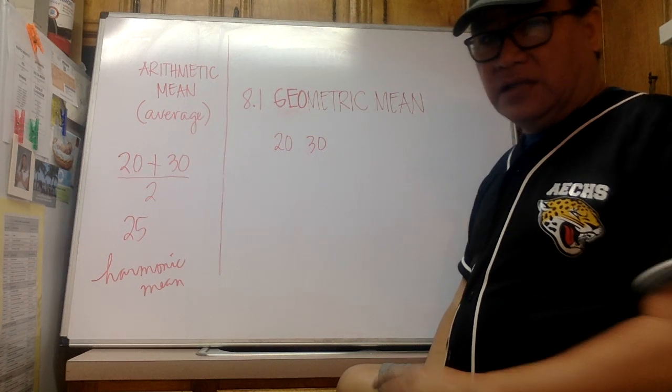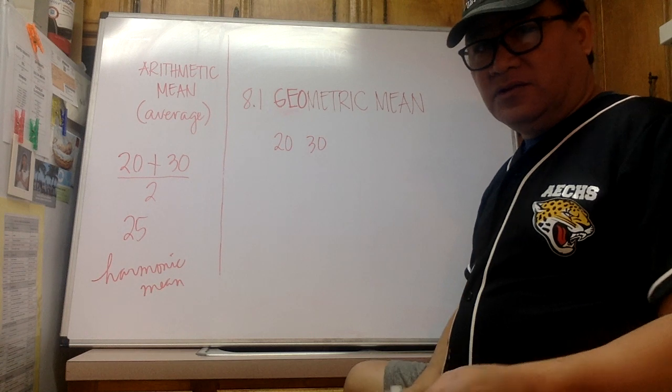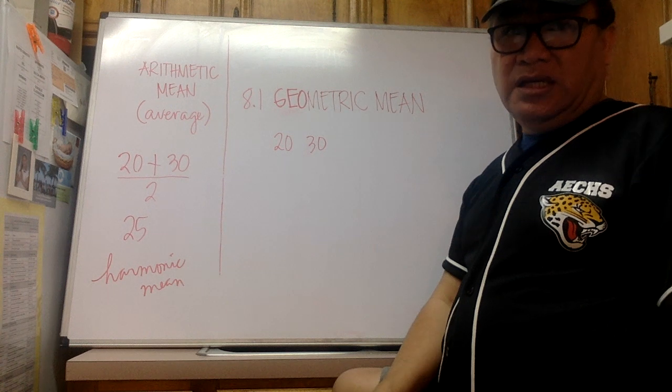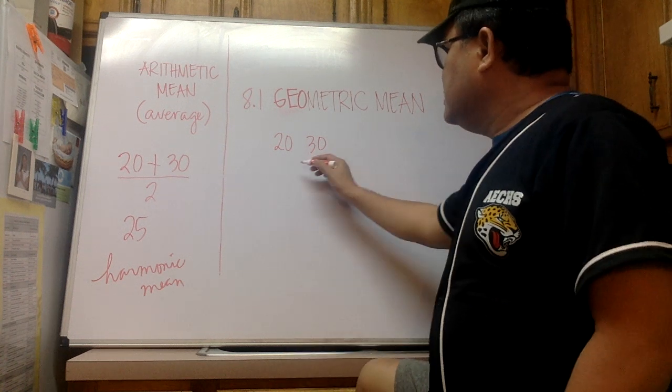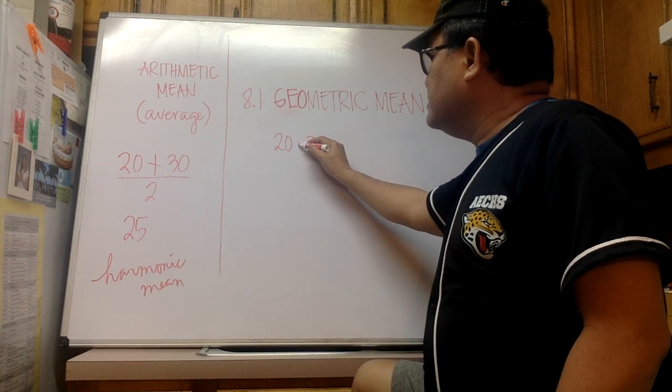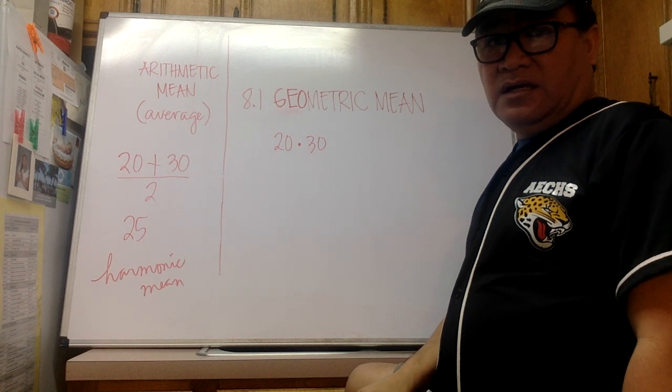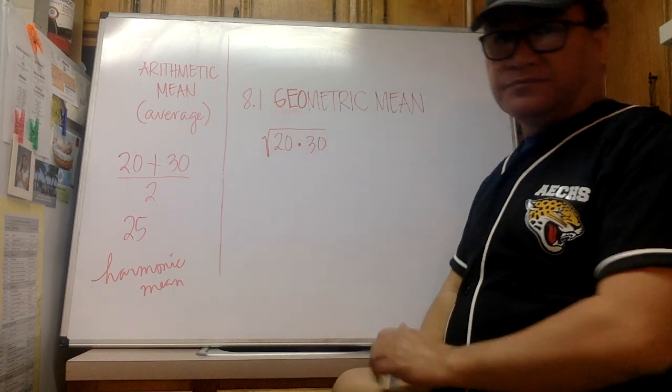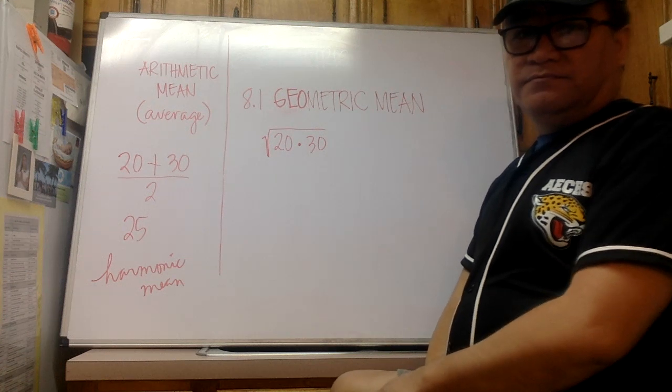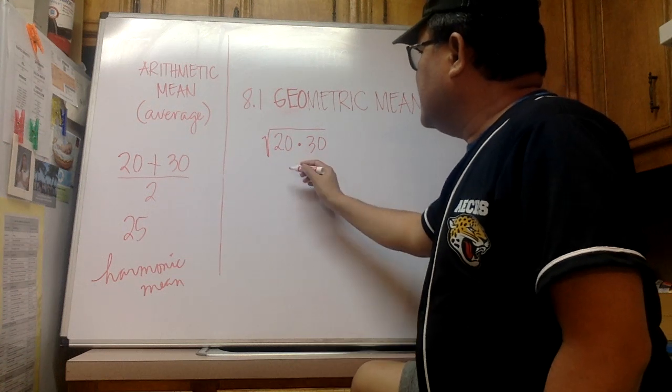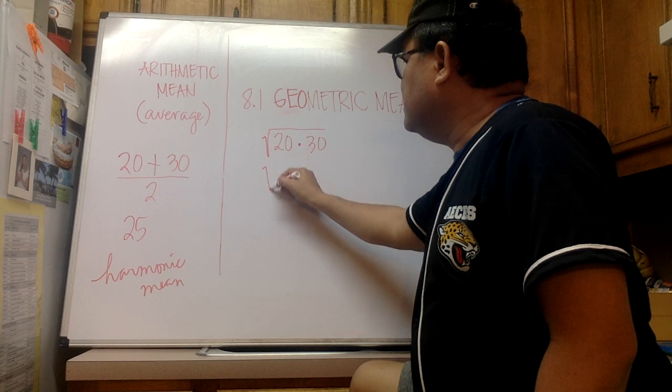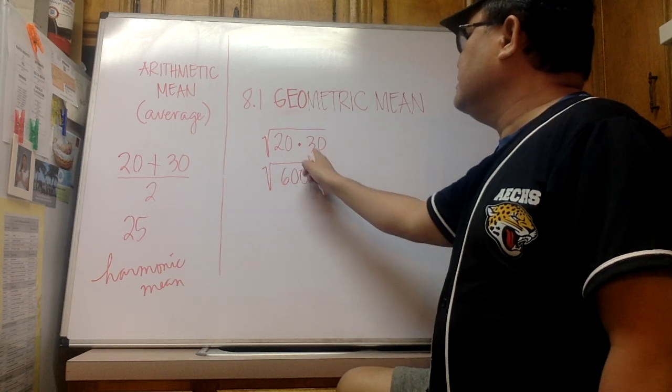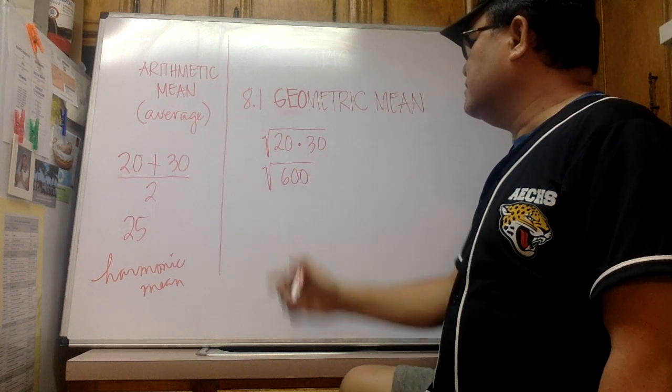So to find the geometric mean, listen to this: to find the geometric mean all we have to do is multiply the two numbers. Yeah, you heard it. For the arithmetic mean you have to add, but for geometric mean you have to multiply. So 20 times 30, and then you take the square root of that.